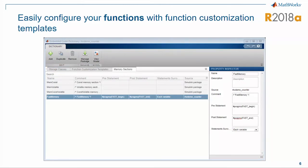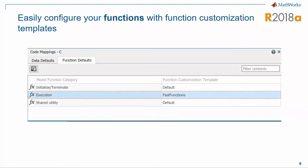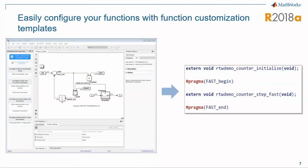Drilling into this, you can see that I've added pragmas to the functions and changed the comment. You can then easily apply these new customizations to different types of functions. After generating code, you can see that we've now changed the step function name and added pragmas. This new capability makes it easier than ever to change how your functions come out.